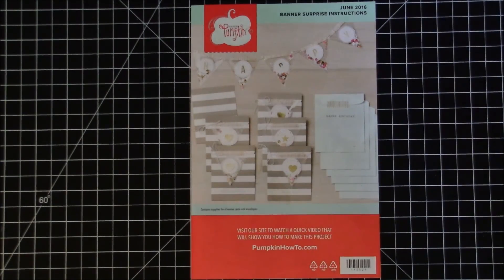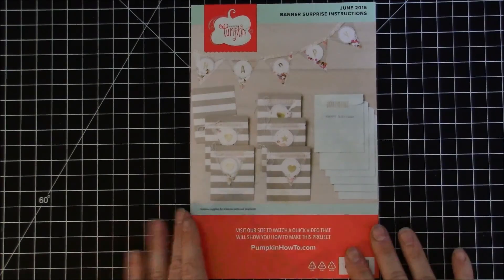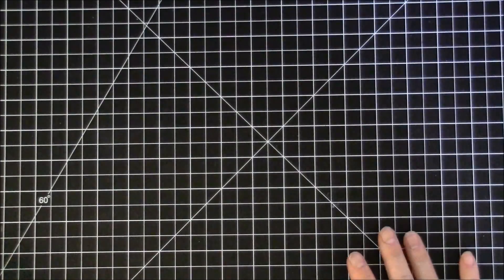But since this kit had some great washi tape and a lot of sequins, you can't help but make a shaker card. So I made two shaker cards with the rest of my card bases.